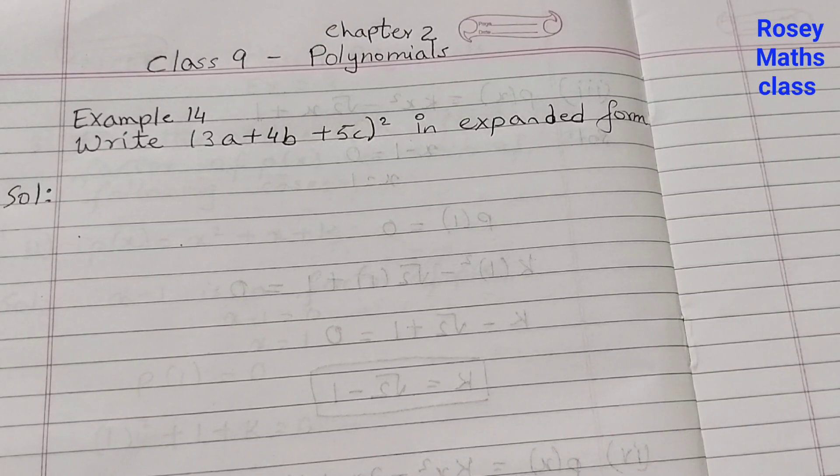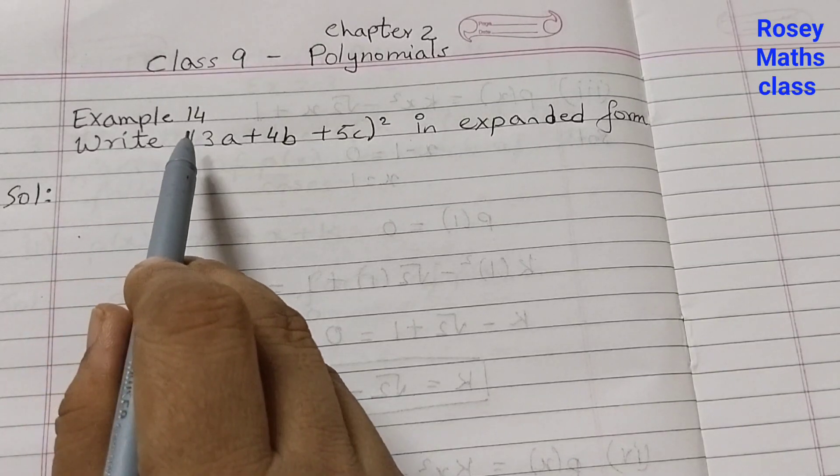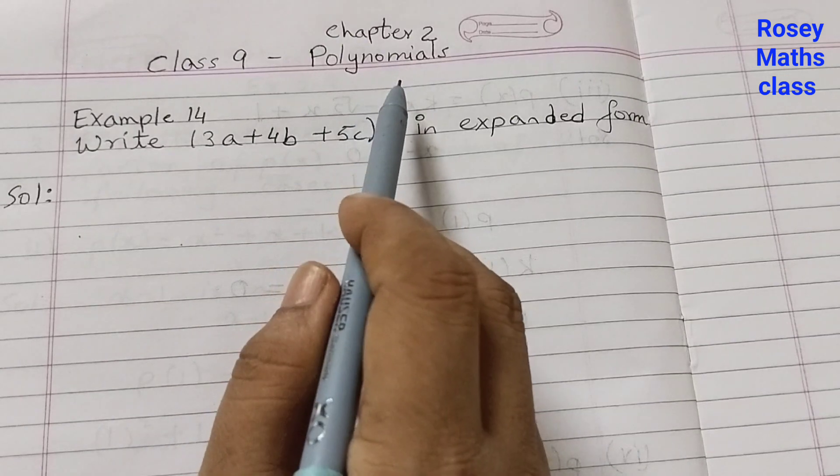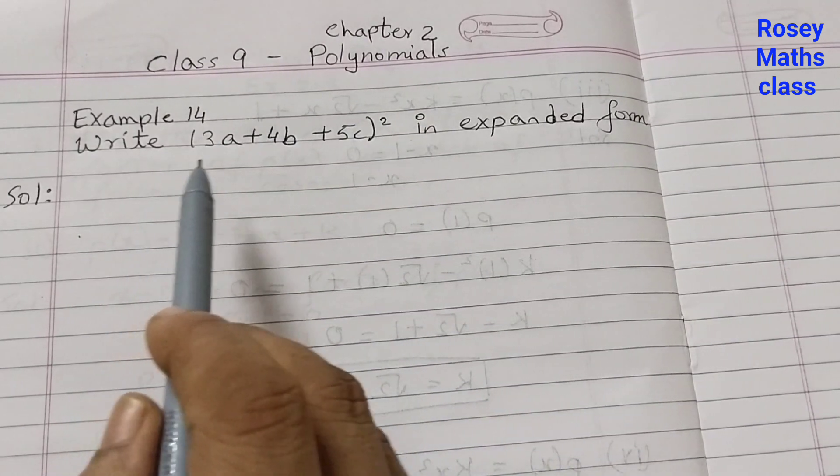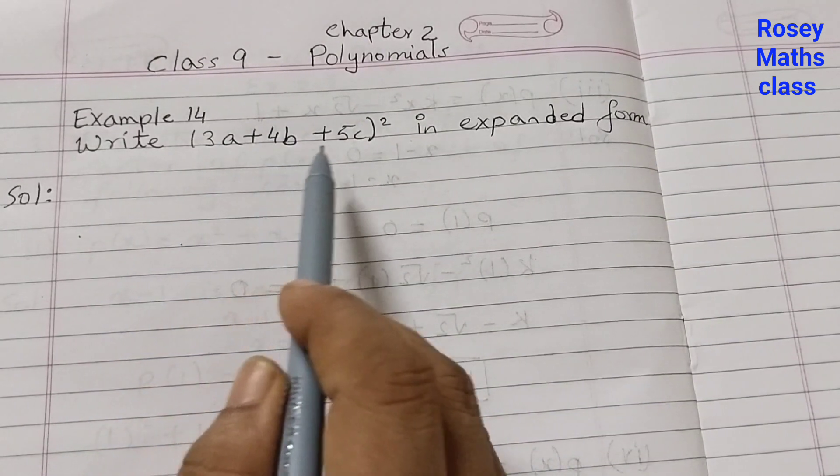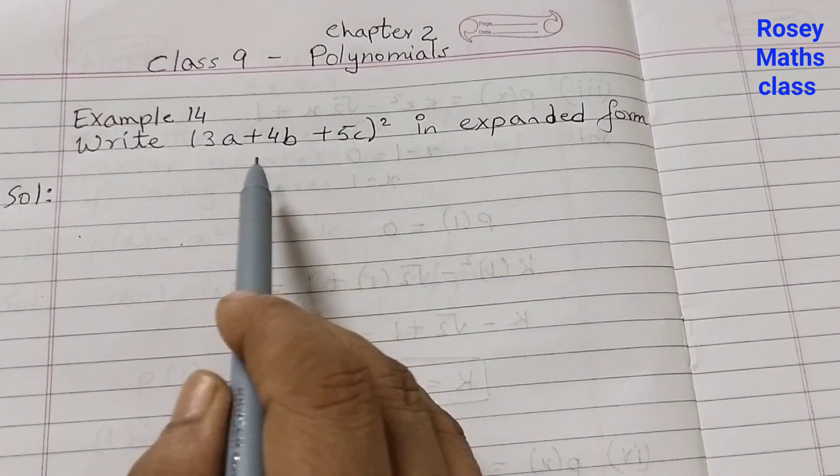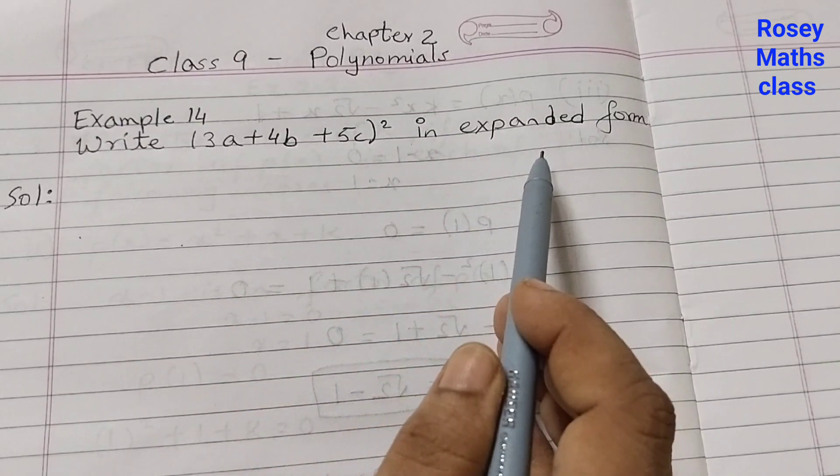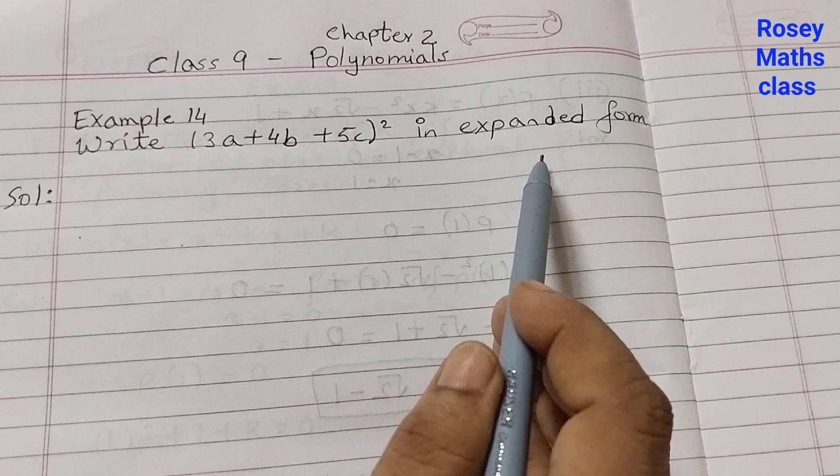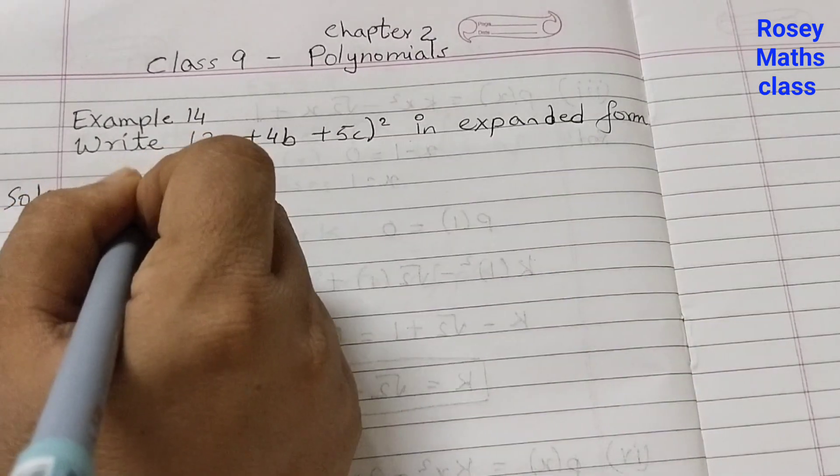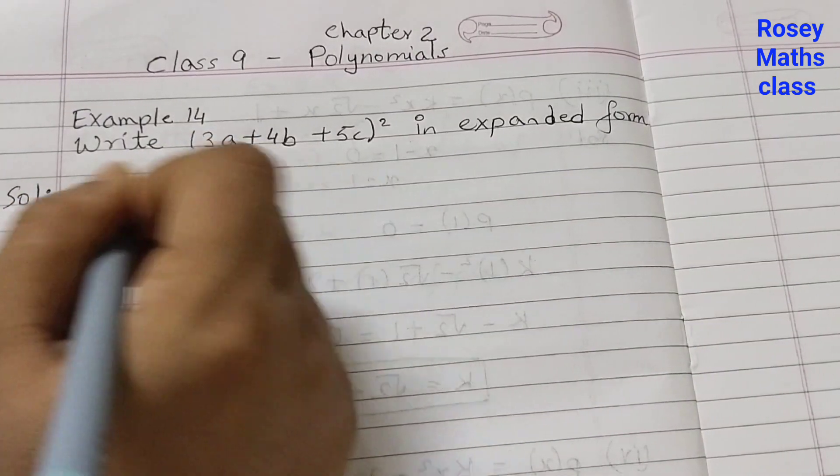Hello students, in today's video we shall discuss Example Number 14 of Chapter 2, Polynomials. Write (3a + 4b + 5c)² in expanded form. So to solve this, we need the identity (x + y + z)².